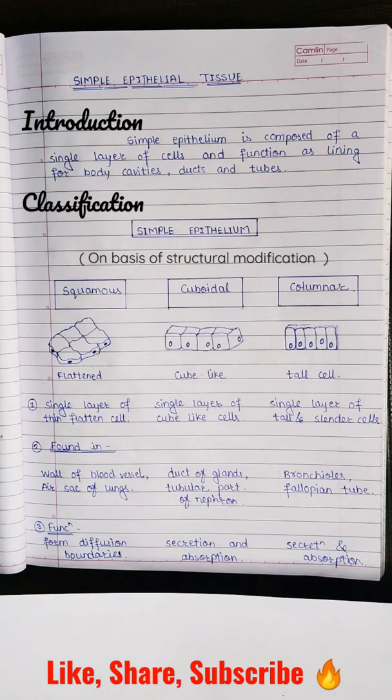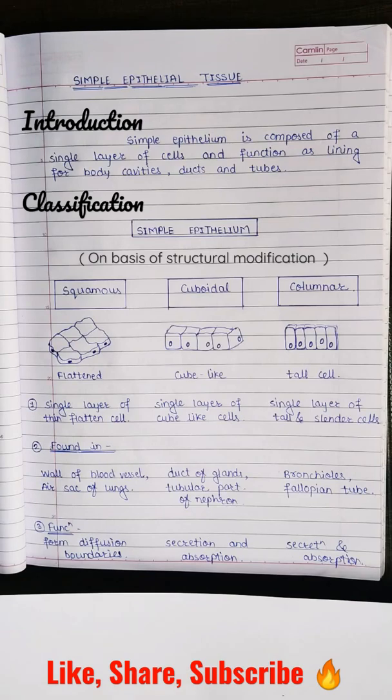Cuboidal epithelium are cube-like, consisting of a single layer of cube-like cells. They are found in ducts of glands and tubular part of nephron and help in secretion and absorption. Columnar epithelium are tall cells found in bronchioles and fallopian tubes, and their main function is secretion and absorption.